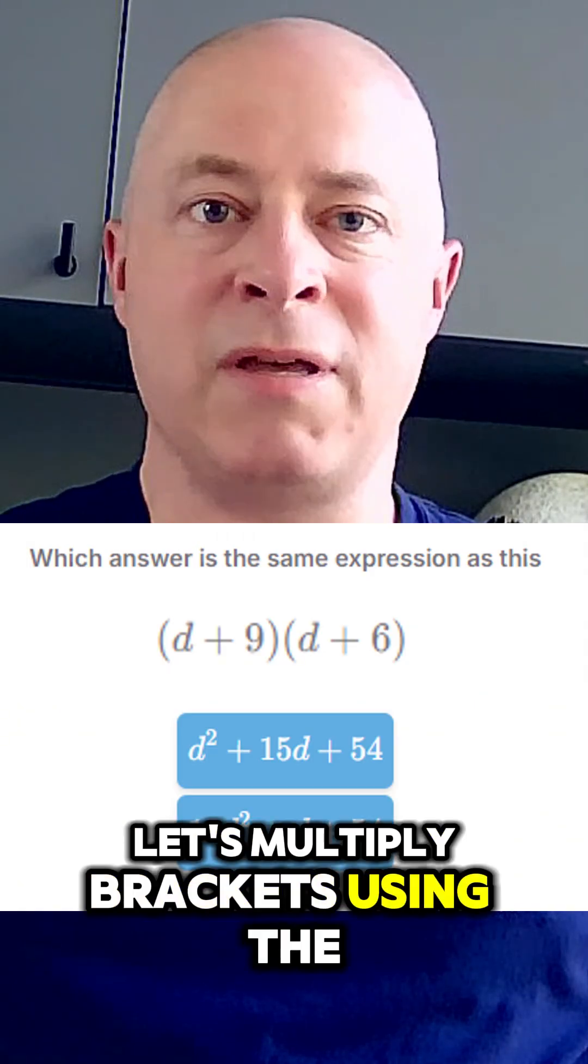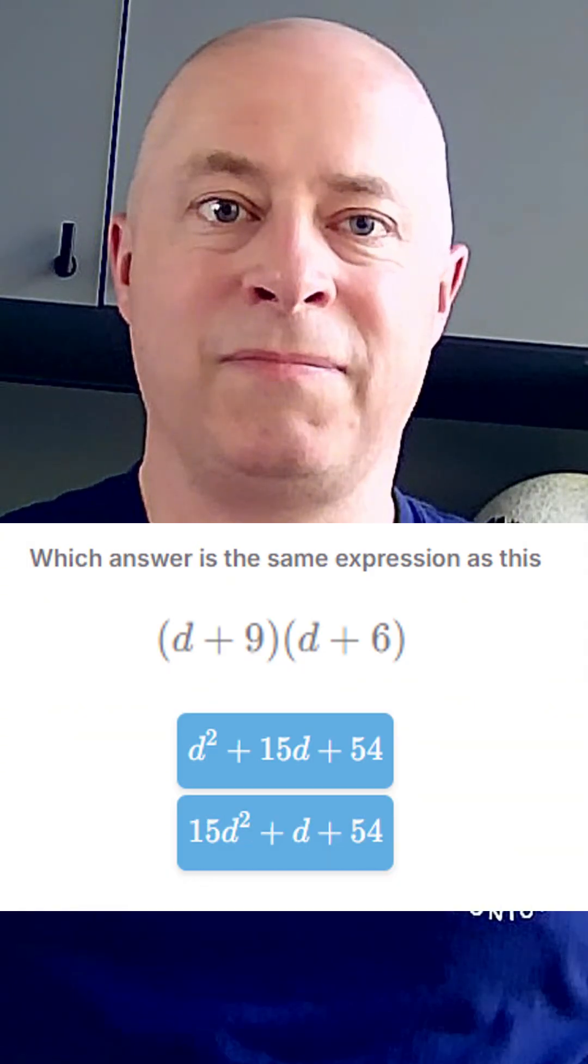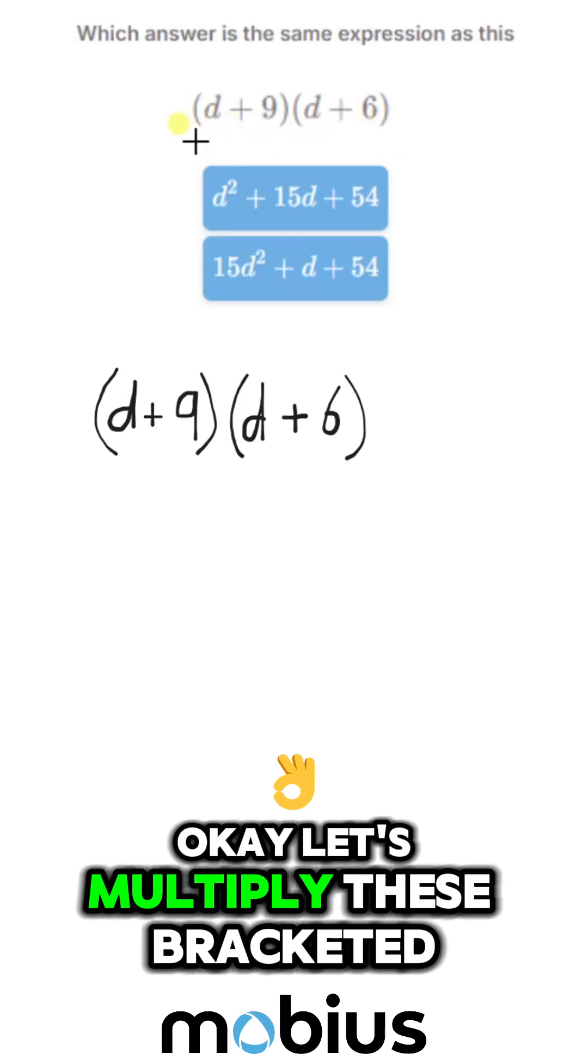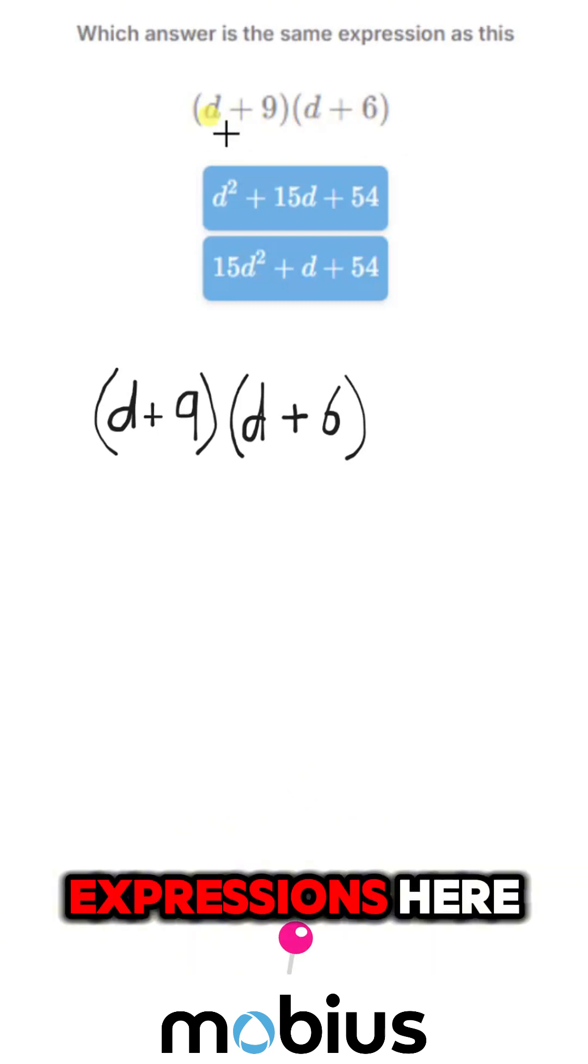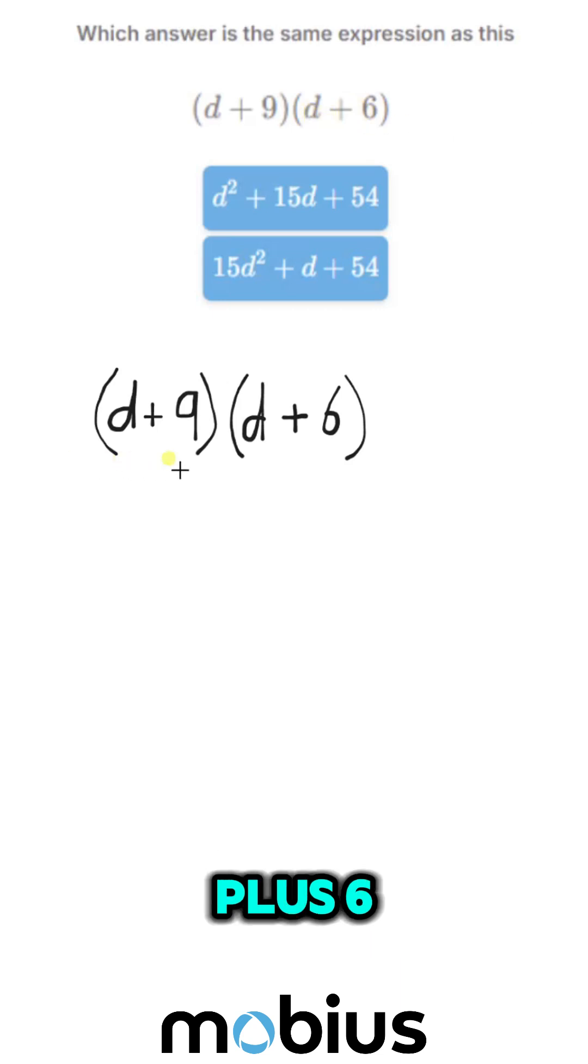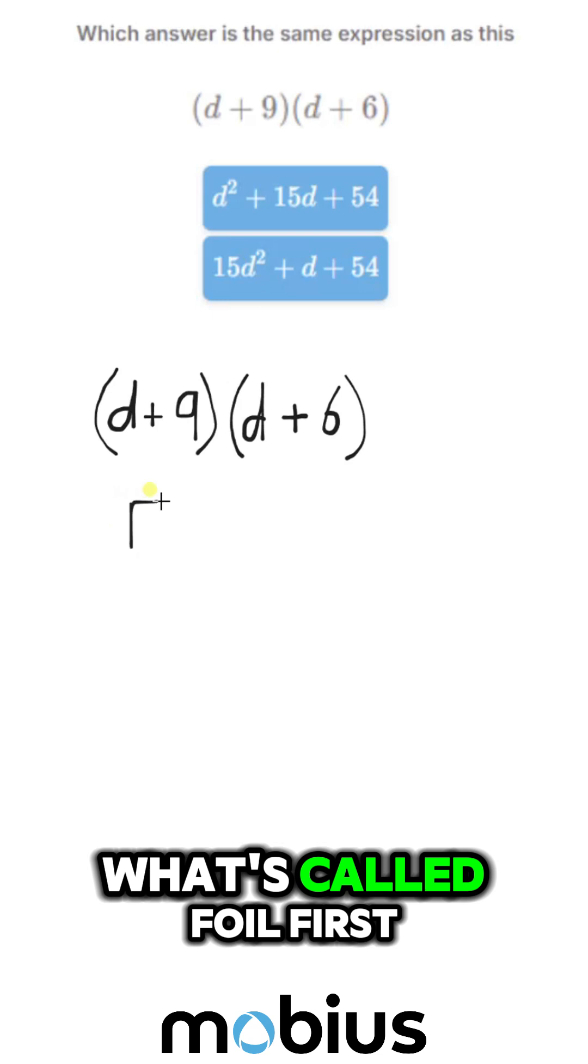Let's multiply brackets using the FOIL approach. Okay, let's multiply these bracketed expressions here, d plus 9 times d plus 6. So we've rewritten them over here, and we're going to use what's called FOIL.